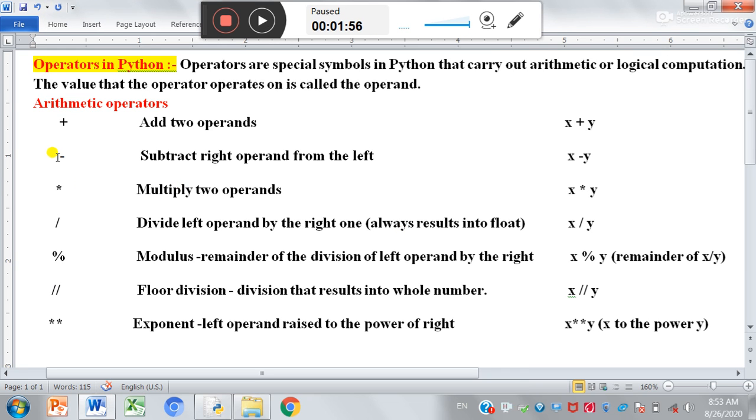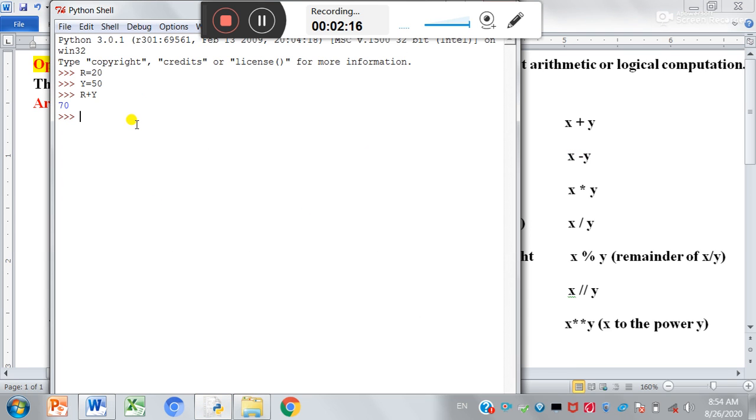Now second operator: this operator will subtract right operand from the left operand. So x minus y. How does it work in Python shell? Let us do it practically. So again, we have already defined values for r and y. Now if we write r minus y, the output will be minus 30. Because r is 20 and y is 50. So 20 minus 50 will be minus 30. Because the minus sign has the larger value. Now y minus r will be plus 30. So in this way, the minus operator will work.